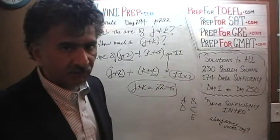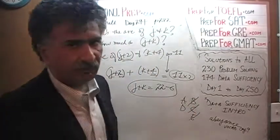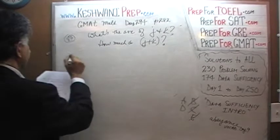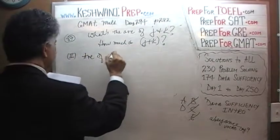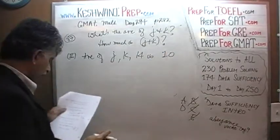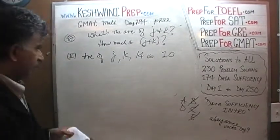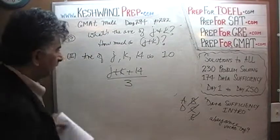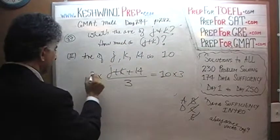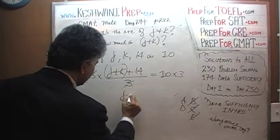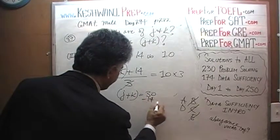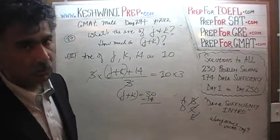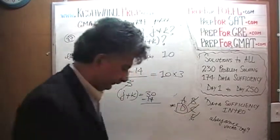Now that we have established the first statement by itself is sufficient, we know the answer cannot be B, C, or E — it would have to be A or D. The second statement tells us that the average of J, K, and 14 is 10. If the average of these three numbers is 10, that means (J plus K plus 14) over 3 equals 10, which means their sum must be 30. So J plus K is simply 30 minus 14, which is 16. The second statement by itself also does the job. The answer is D.